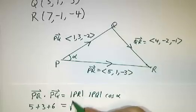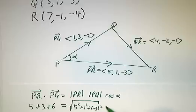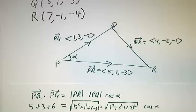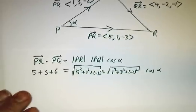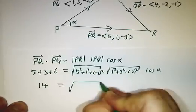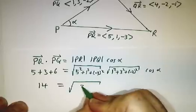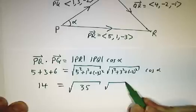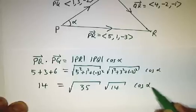This is 5 times 1 plus 1 times 3 plus negative 3 times negative 2 is equal to the length of PR. The length of PR is the square root of 5 squared plus 1 squared plus negative 3 squared, times the cosine of alpha. So on the one hand we got 14, and that's the square root of 25 plus 1 plus 9 makes 35.